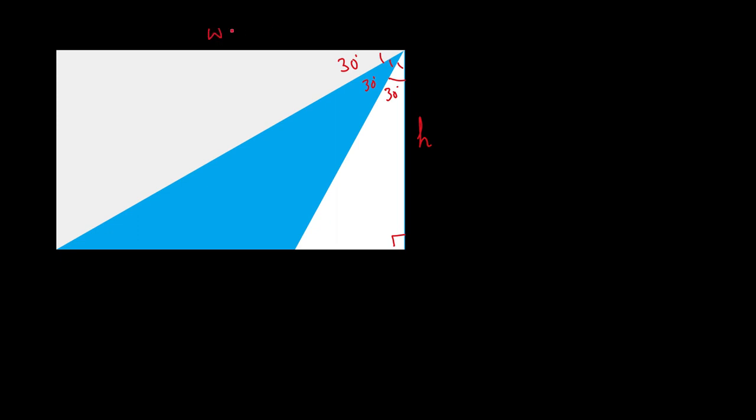We are given that these three angles are equal, and we know all angles of a rectangle are 90 degrees. So if we divide 90 into three equal parts, we get 30 degrees each. So this angle is 30°, this is 30°, and this is also 30°. Now let's assume this length is h (height) and this is w (width).